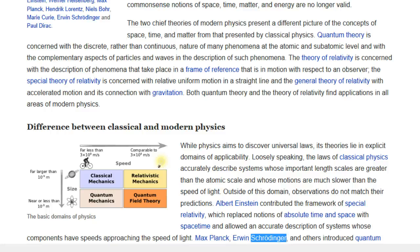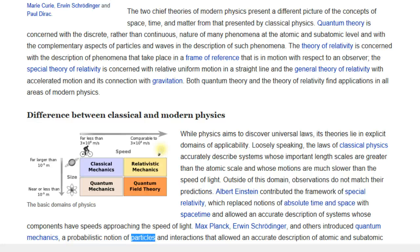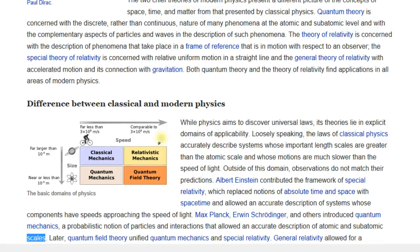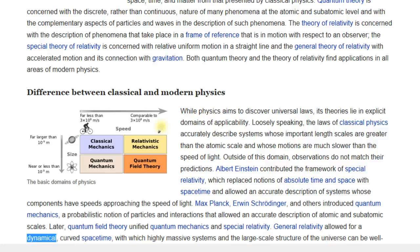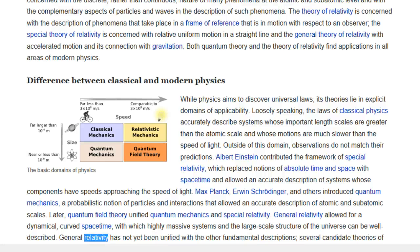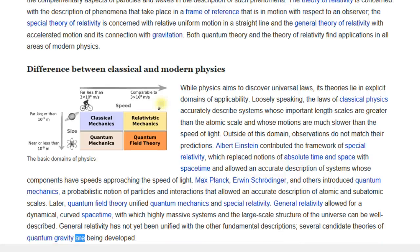Max Planck, Erwin Schrödinger and others introduced quantum mechanics, a probabilistic notion of particles and interactions that allowed an accurate description of atomic and subatomic scales. Later, quantum field theory unified quantum mechanics and special relativity. General relativity allowed for a dynamical, curved space-time, with which highly massive systems and the large-scale structure of the universe can be well described. General relativity has not yet been unified with the other fundamental descriptions. Several candidate theories of quantum gravity are being developed.